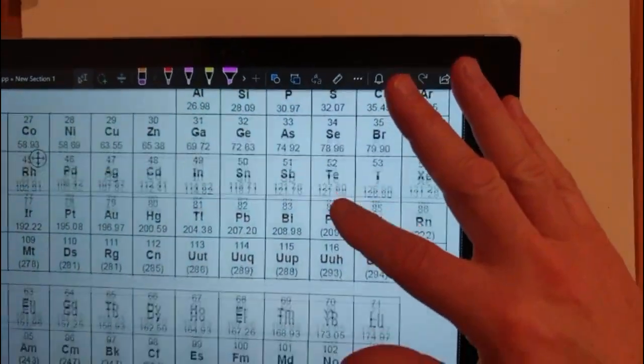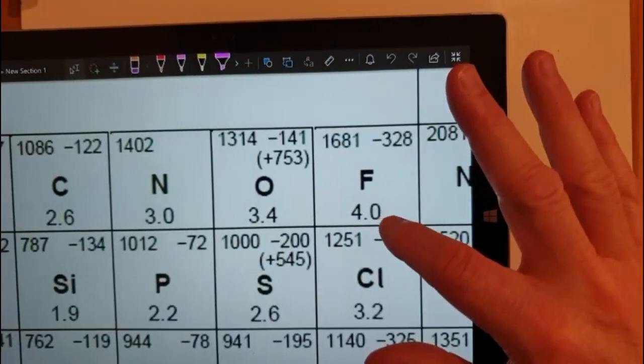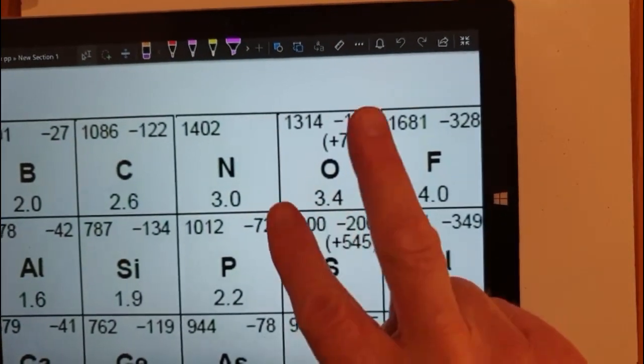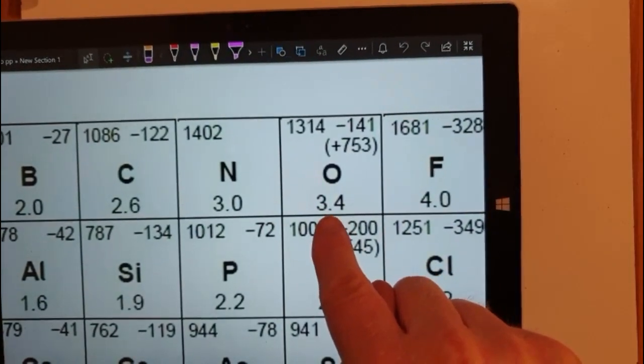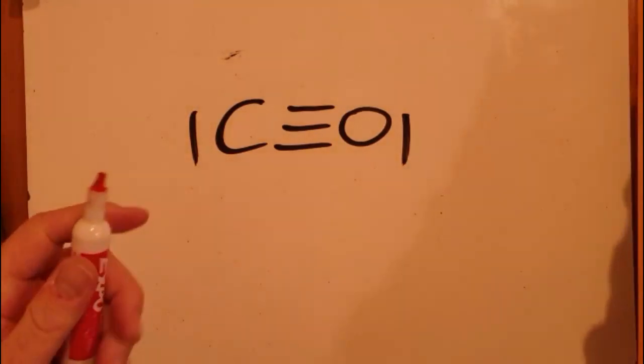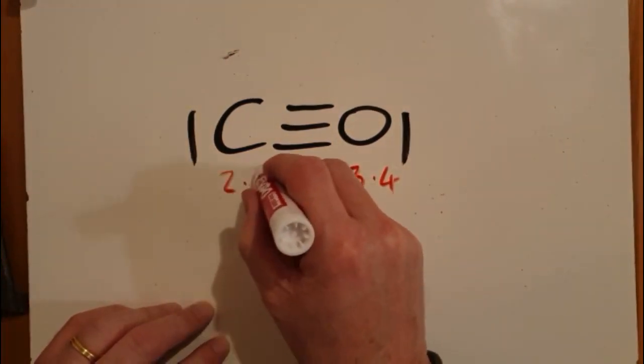So electronegativity, you've got fluorine with the highest electronegativity of four, but you can see that oxygen loves electrons in the bond or is more attracted to the electrons in the bond than the carbon. So 3.4 compared to 2.6. So 3.4 has a higher electronegativity than 2.6.